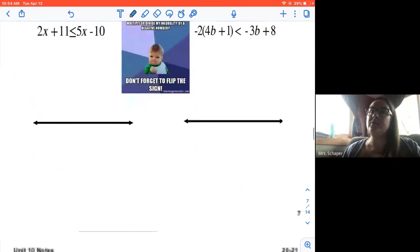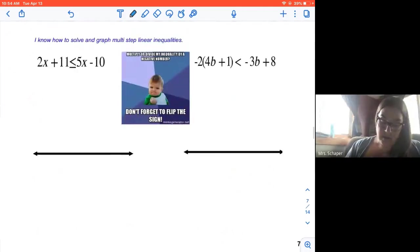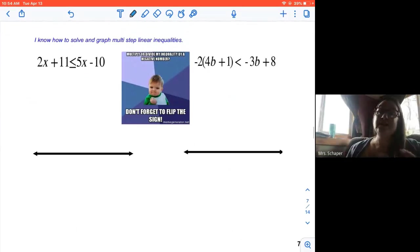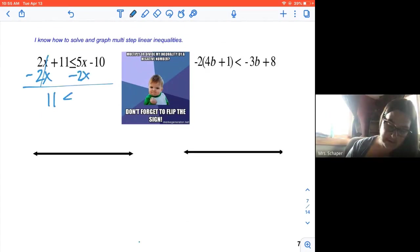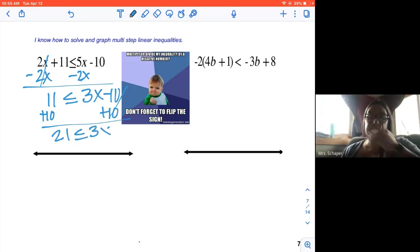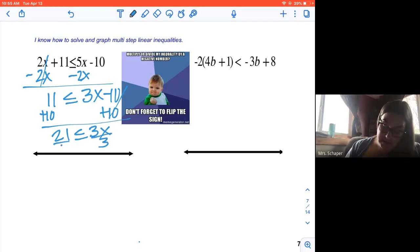A couple more problems. Here we go. Variables on both sides is the focus right now. So when I look at this first one, both sides are simplified. So now I just need to get the variable alone. So I'm going to subtract two X from both sides. So 11 is less than or equal to three X minus 10. I'm going to add 10 to both sides. So 21 is less than or equal to three X. We're going to divide both sides by three.